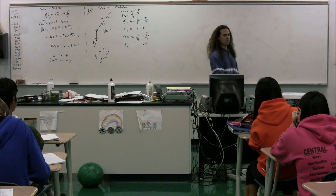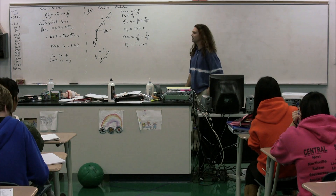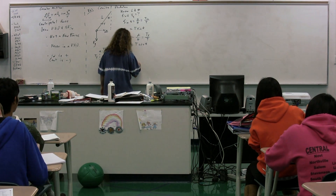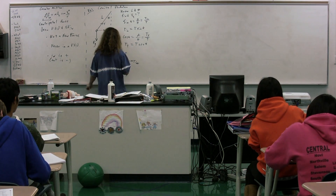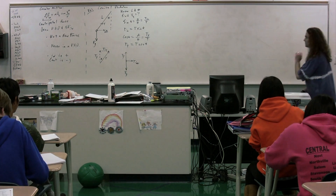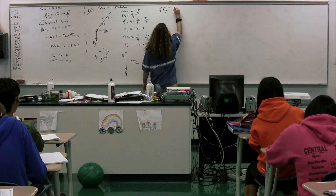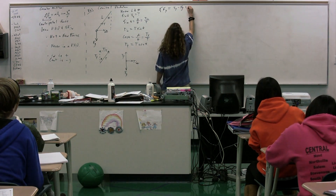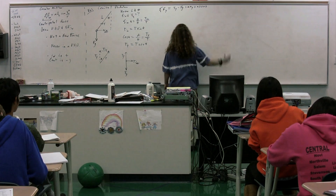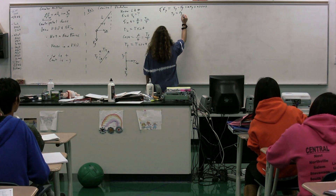We have drawn our free body diagram and broken forces into components. We should redraw the free body diagram. We now have the force of gravity, the tension in the in direction, and the tension in the y direction. Sum the forces in the y direction: tension in the y direction minus the force of gravity equals zero, because it's not moving up or down in the y direction. So tension in the y direction equals the force of gravity.